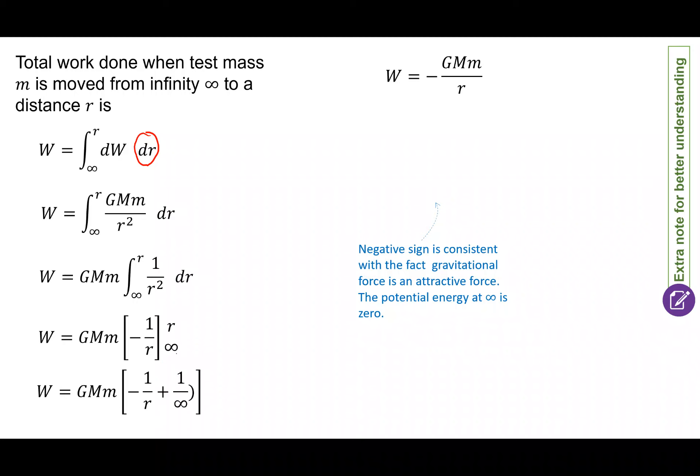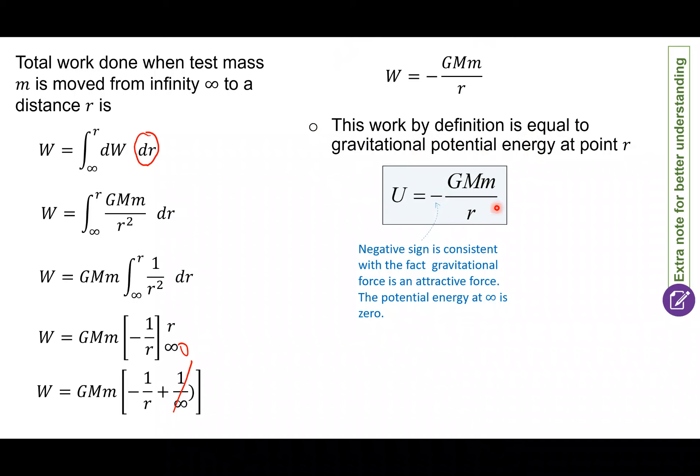So you akan end up you punya equation. Selepas integrate, you akan dapat negative 1 per R plus 1 over infinity dan 1 over infinity kita akan dapat kosong. So kita akan end up equation work done adalah sama dengan negative G M besar M over R. So daripada situ kita boleh conclude that this work by definition is equal to the gravitational potential energy. So maksudnya potential energy adalah sama juga dengan work done untuk bawa sesuatu test mass dari infinity kepada satu point berdekatan dengan planet. Negative sign is consistent. So daripada integration kita tadi, work done kita pun kita dapat negative consistent with the fact of gravitational force kita adalah attractive force. So the potential energy at infinity is 0.